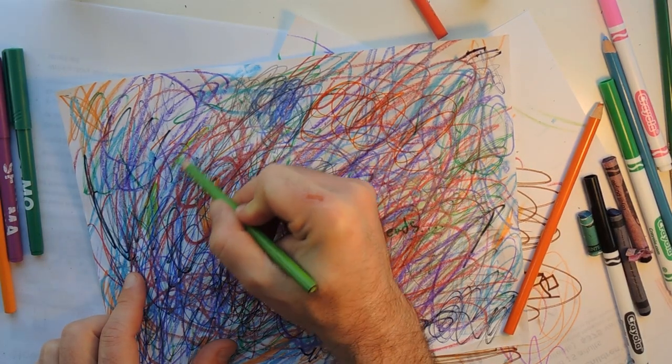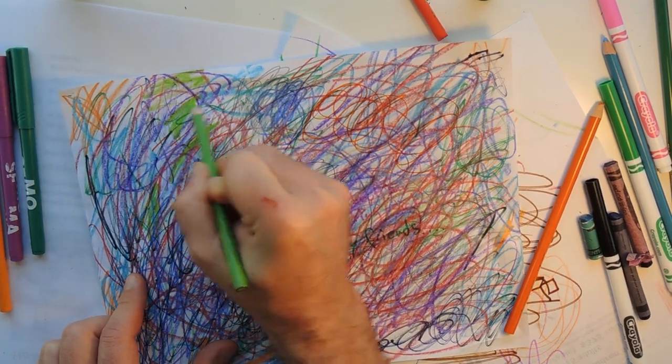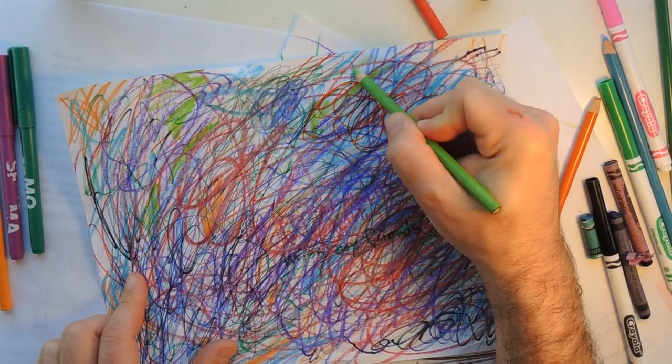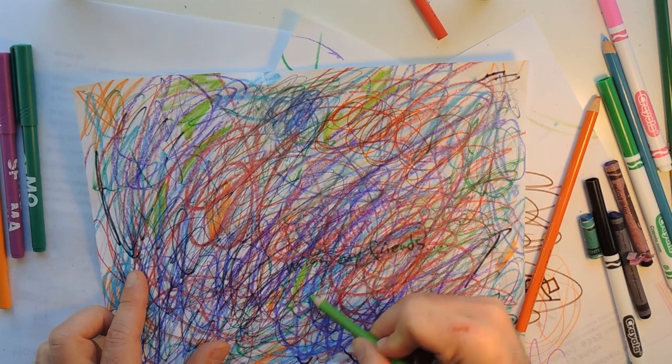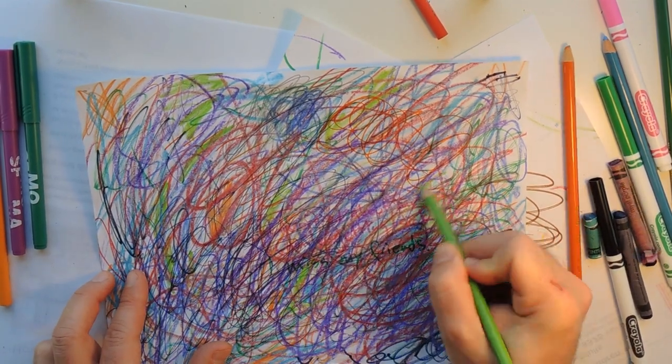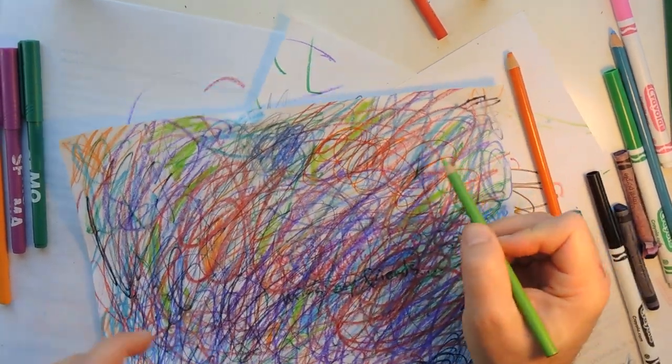And notice, notice how it feels. Now, once you've filled a lot of the space, you can try finding shapes in your scribbles and coloring those in. That can be relaxing too. Lots of scribbles and then color in all the little shapes.